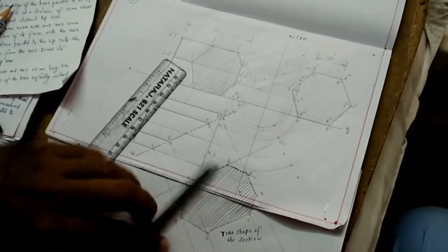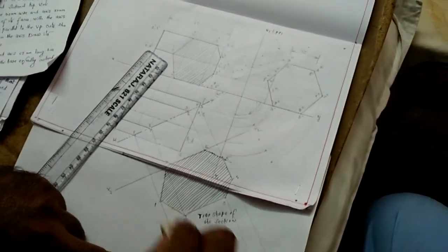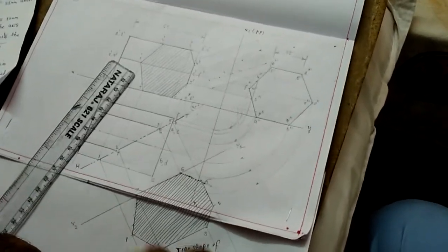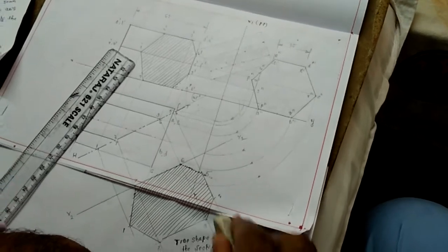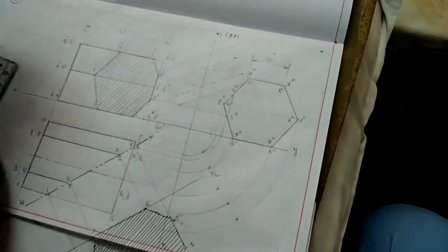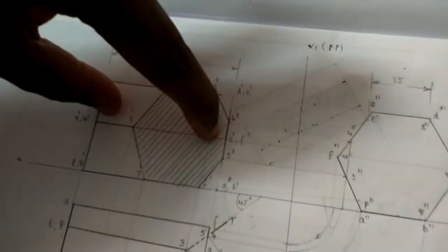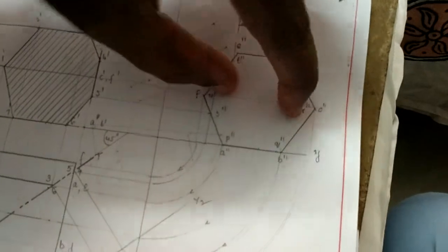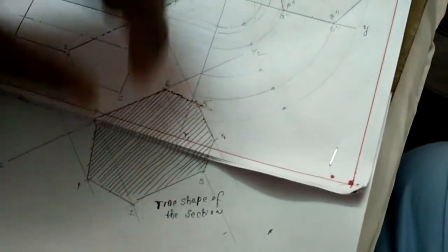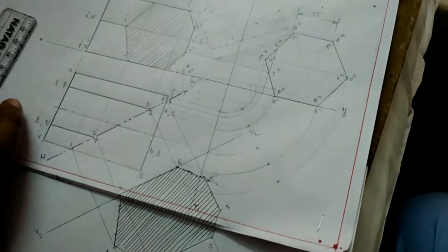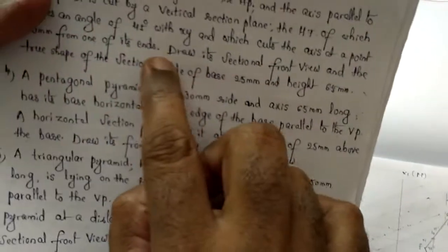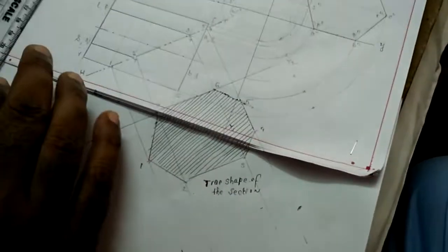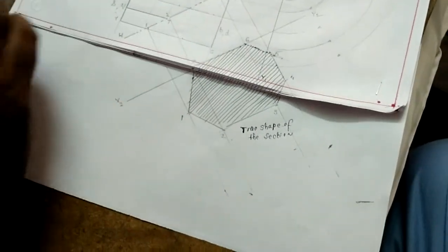Once the problem is over, remove any extra lines and arrange them to get a clear picture. Remember: this is the sectional front view, this is the top view, this is the side view, and this is the true shape. This problem required drawing the sectional front view — which is done — and the true shape of the section — which is also done. Follow this procedure and you get the answer.